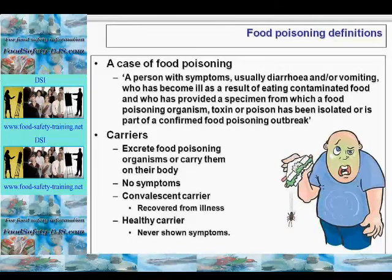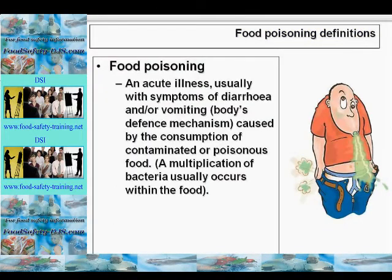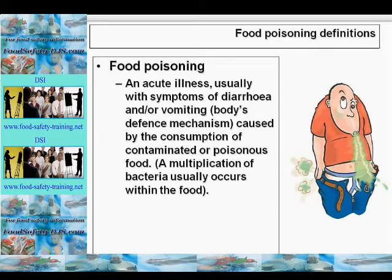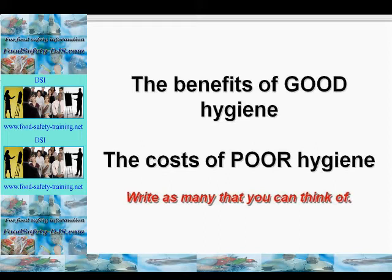It's worth mentioning the definition of food poisoning again: it's an acute illness, usually with symptoms of diarrhea and/or vomiting — these are the body's defense mechanisms — and it's caused by the consumption of contaminated or poisonous food. A multiplication of bacteria usually occurs within the food.